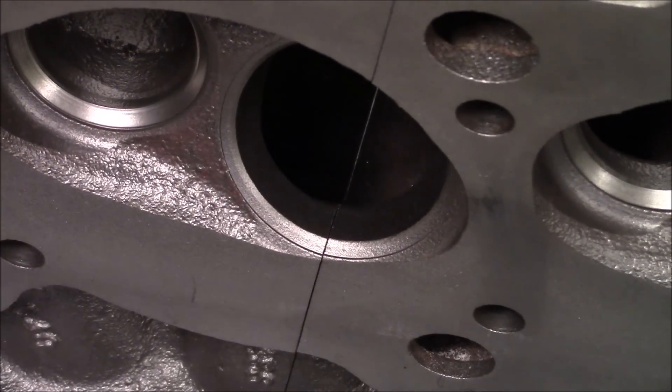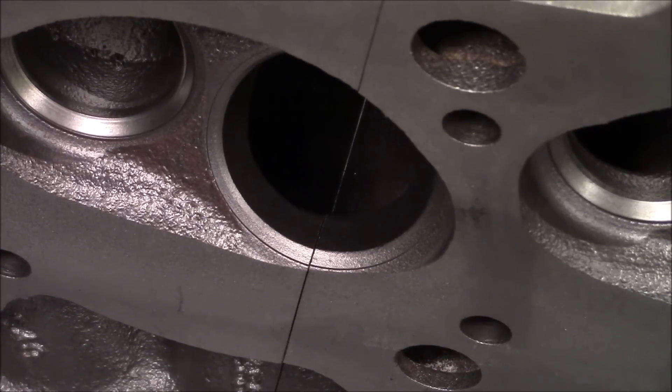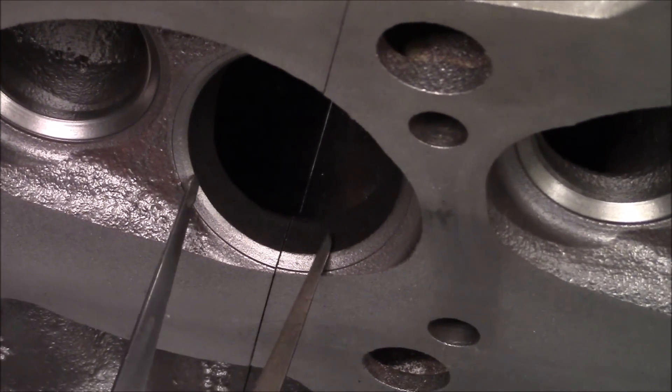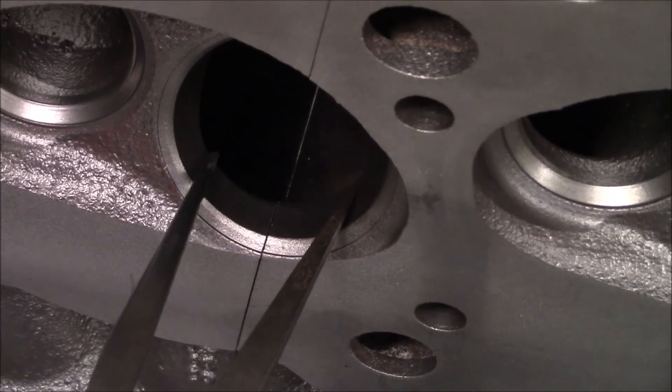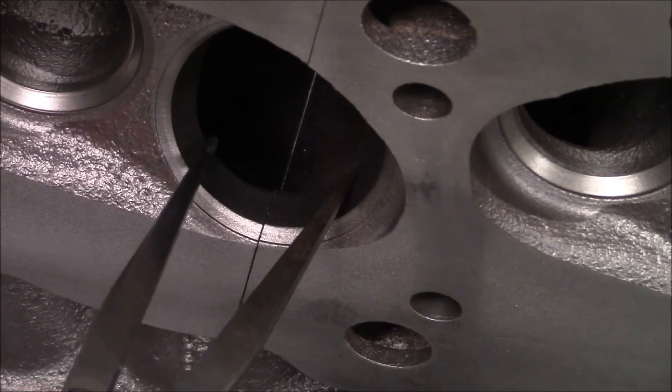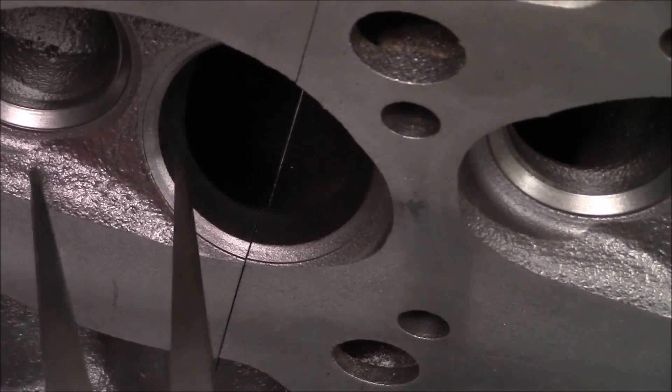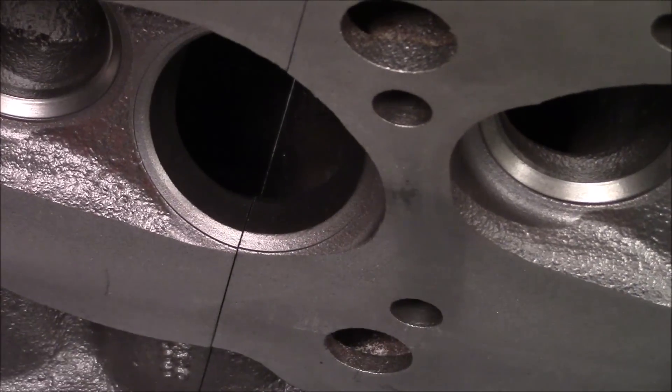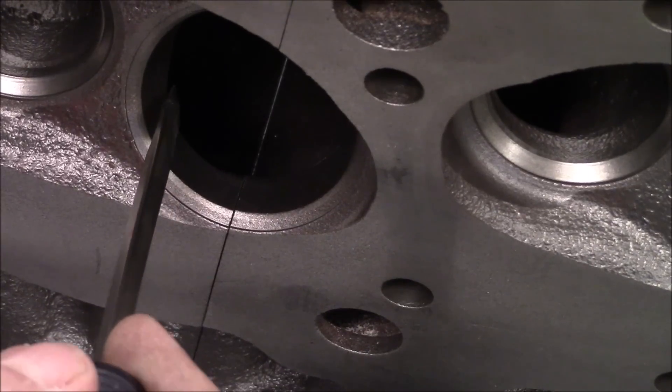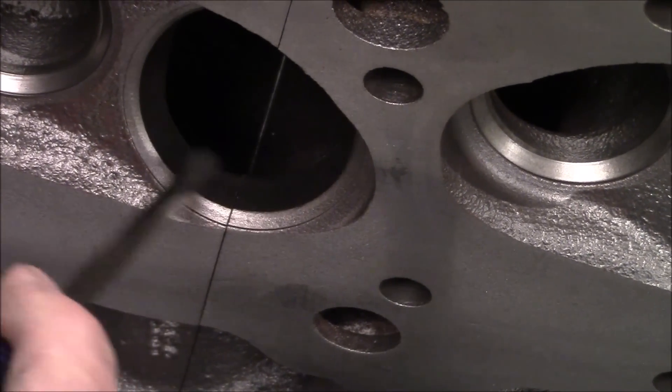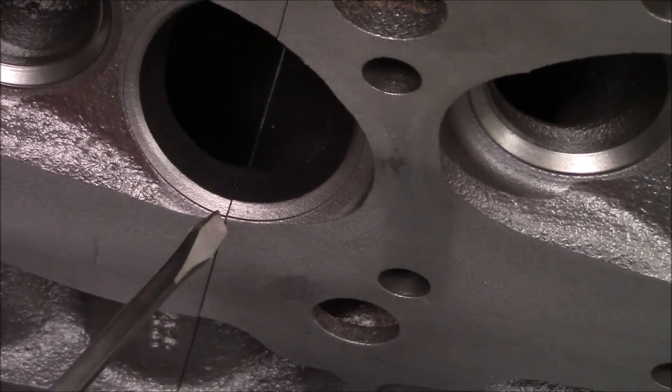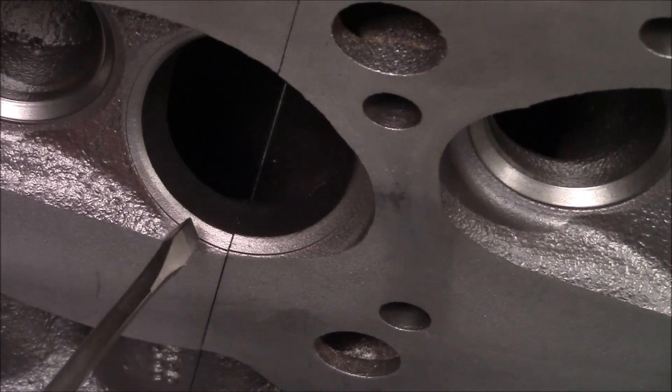As we port the head, you'll hear us talk about tilting the short turn, of course, laying the short turn back and the width of the short turn, which the width would be as the floor of the port makes its turn, these corners of the port would be widened. And we'd also would tilt the floor of the port the direction we'd want it to go to increase the flow, which we'll demonstrate as we port the head.